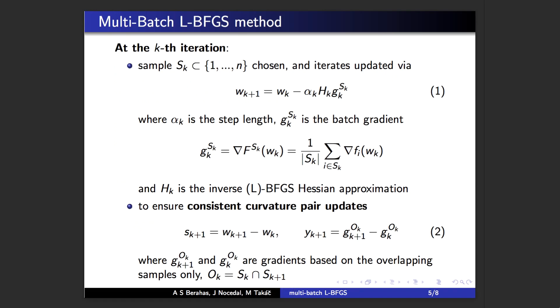In this slide, we show the general form of the proposed algorithm. Iterates are updated via equation 1, where alpha_k is the step length, g_k^S_k is the sample gradient, and H_k is the inverse LBFGS Hessian approximation. To ensure consistent curvature pairs, the gradient differencing is computed on the overlapping samples only, as shown in equation 2.